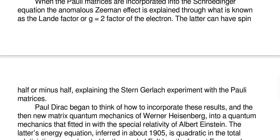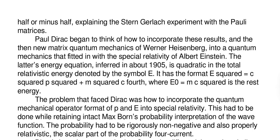The latter can have spin half or minus half, explaining the Stern-Gerlach experiment and the Pauli matrices. Pauli and Dirac began to think of how to incorporate these results and the then-new matrix quantum mechanics of Born and Heisenberg into a quantum mechanics that fitted in with the special relativity of Albert Einstein. The latter's energy equation, inferred in about 1905,